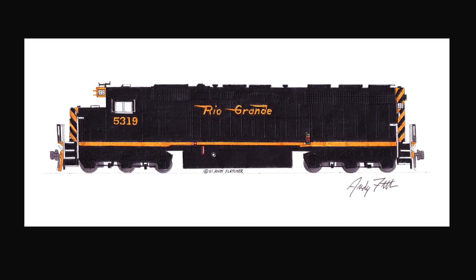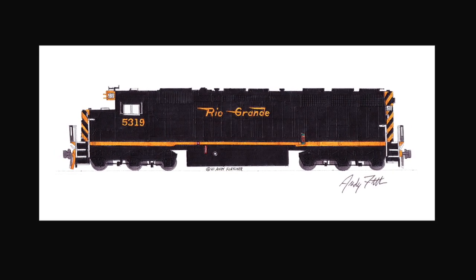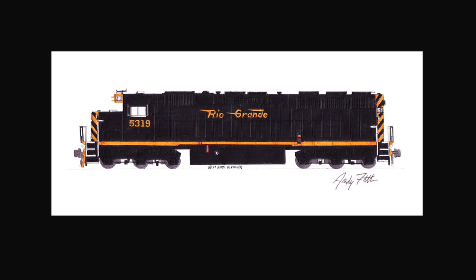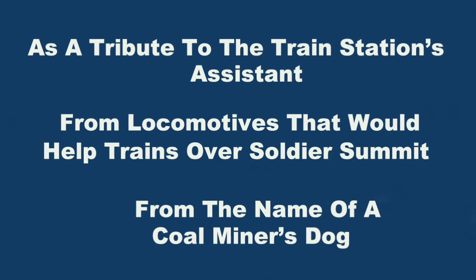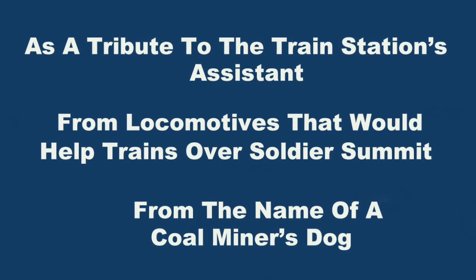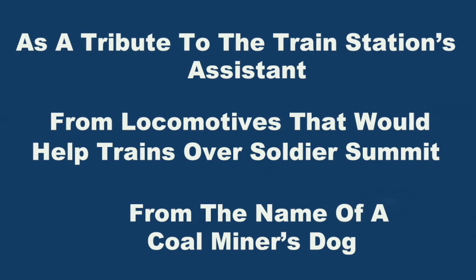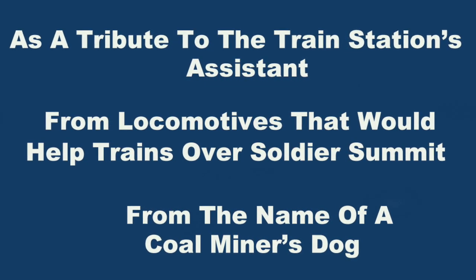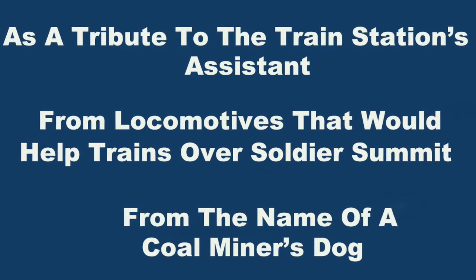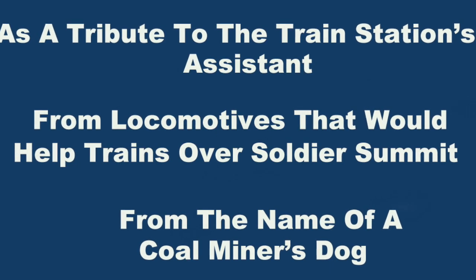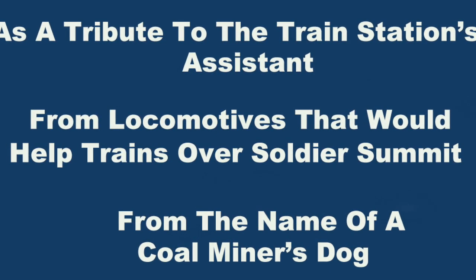For our third and final question, how did Helper Utah get its name? A. As a tribute to the train station's assistant. B. From locomotives that would help trains over Soldier Summit. Or C. From the name of a coal miner's dog.